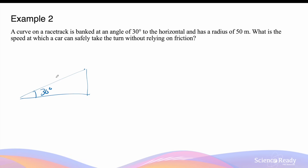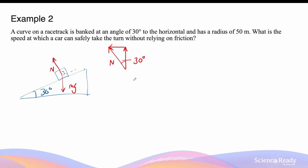This question examines circular motion on a frictionless banked surface. Let's draw a diagram: we have a 30-degree banked angle, representing the car as a simple box. The free body diagram shows the weight force of the car going down and the normal force perpendicular to the bank surface. We can resolve the normal force into its vertical and horizontal components. By geometry, the angle between the normal force and the vertical is also 30 degrees.